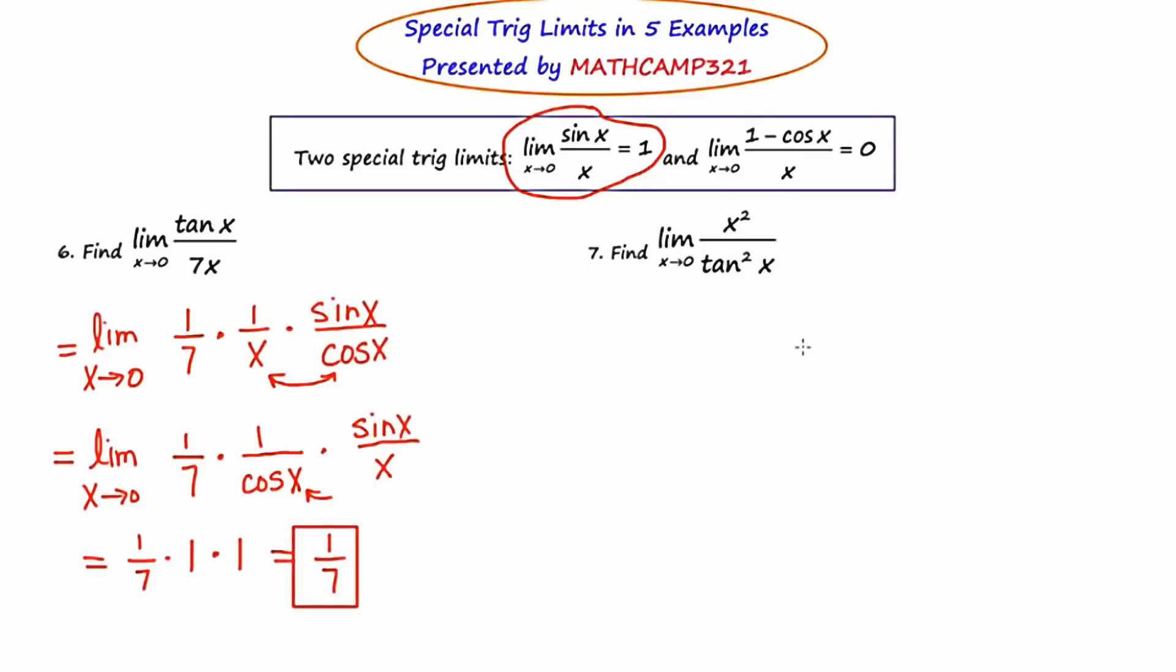Our final example is find the limit as x approaches zero of x squared over tan squared x. Again, if we started using direct substitution by inserting zero in for every occurrence of x, we'd end up with zero over zero, which would mean we have to try something else. So I'm going to try to rewrite this in a slightly different way so that we can use one of these rules.